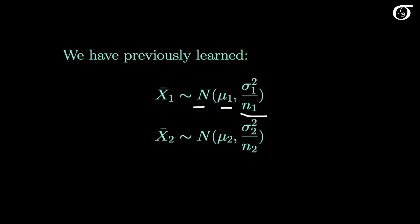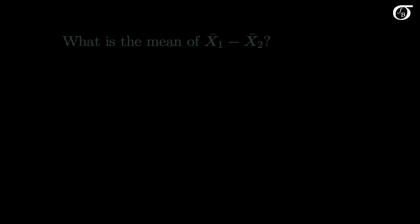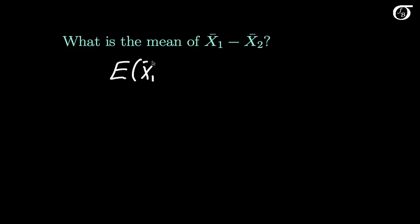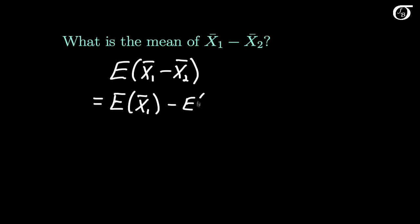Our point of interest in this video is investigating the sampling distribution of the difference in sample means, X1 bar minus X2 bar. What is the mean of the sampling distribution of X1 bar minus X2 bar? If we want the expectation of X1 bar minus X2 bar and recall some properties of expectation, this is simply equal to the expectation of X1 bar minus the expectation of X2 bar — we can split those up.